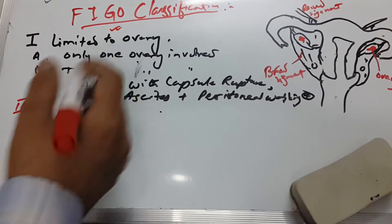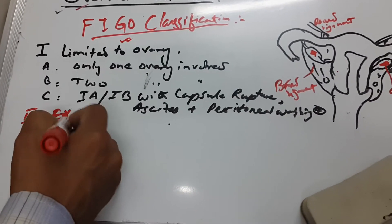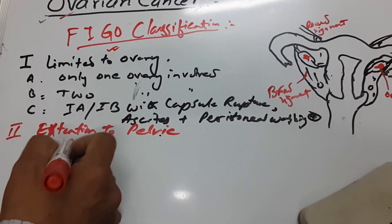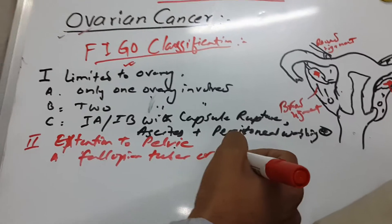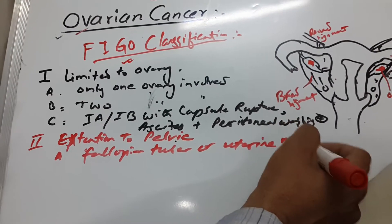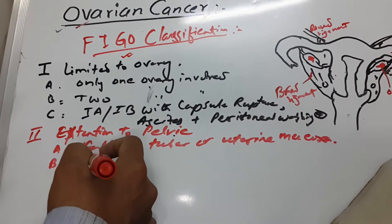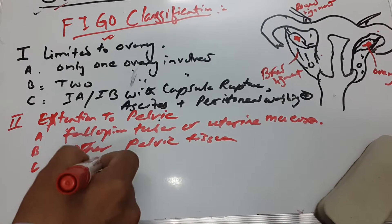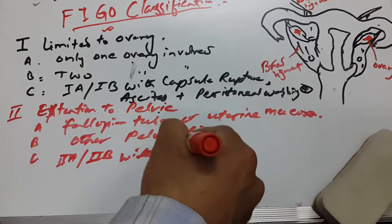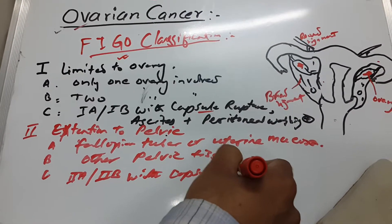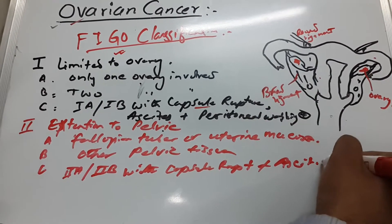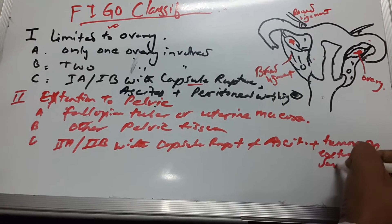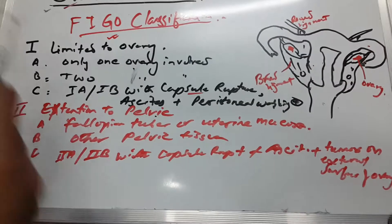In the second stage, the carcinoma extends to the pelvis. Stage IIA involves extension to the fallopian tube or uterine mucosa. Stage IIB is other pelvic tissue involved. Stage IIC is IIA or IIB with capsule ruptures, ascites, peritoneal washing, or tumor on the external surface of the ovary.